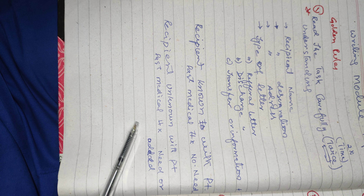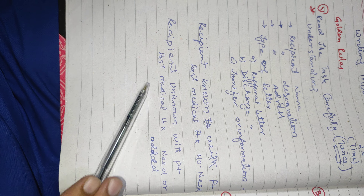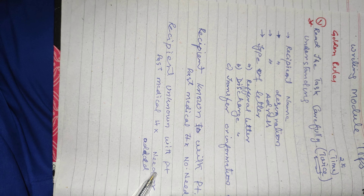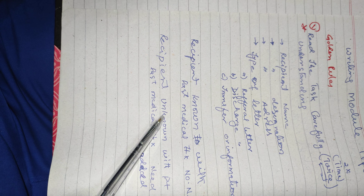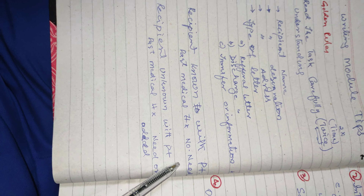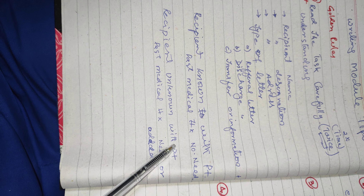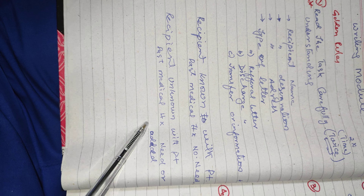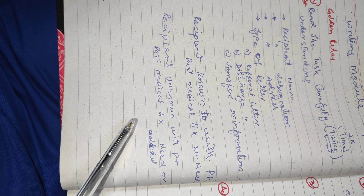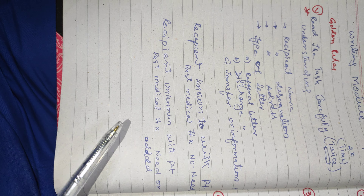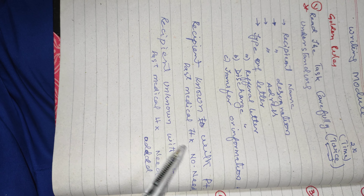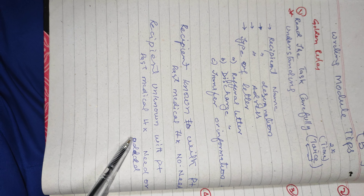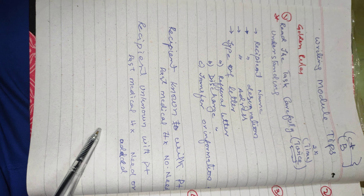In the situation where the recipient is unknown to the patient, the past medical history needs to be added, as compared to when the recipient is known to the patient where there is no need to write the past medical history. We also need to identify what relevant information is and distinguish it from irrelevant information.